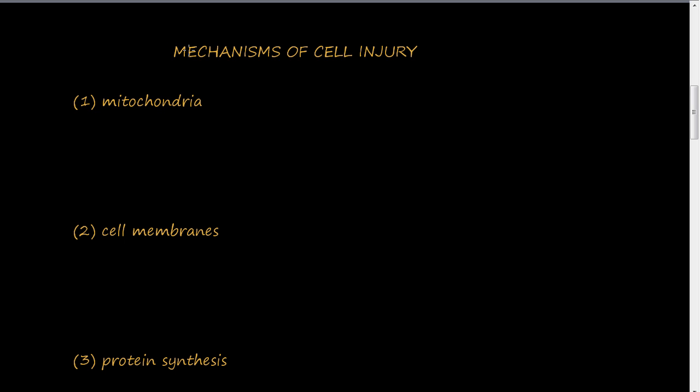In this video we're going to discuss the mechanisms of cell injury. We've talked about necrosis, apoptosis, some of the ways that cells can become injured, and tissues, and what it looks like when they start to die.